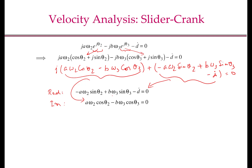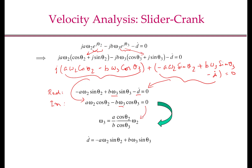The unknowns in these equations are omega 3 and d dot. In the second equation, there is only one unknown, omega 3, so we can solve for it directly and obtain the expression for omega 3. Once omega 3 is known, the first equation gives d dot. Note that we assumed omega 2 is known, meaning the mechanism is driven by the crank. However, if the slider is the driver and d dot is known, we can compute both omega 2 and omega 3 by solving the system of two linear equations in two unknowns.